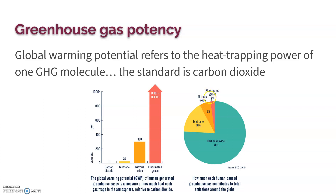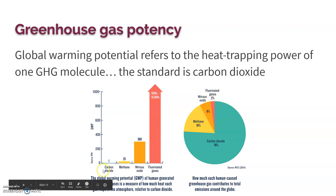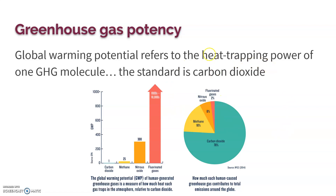CFCs and HCFCs were phased out because they deplete the ozone layer. They were replaced with hydrofluorocarbons (HFCs), which lack the chlorine and therefore don't damage the ozone layer. However, HFCs are very potent greenhouse gases. Even though they make up only a small portion of atmospheric emissions, they have such a powerful impact — that's why there's been a push to get rid of HFCs as well.